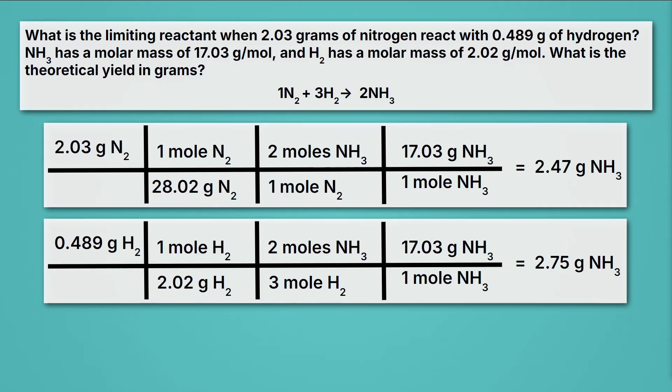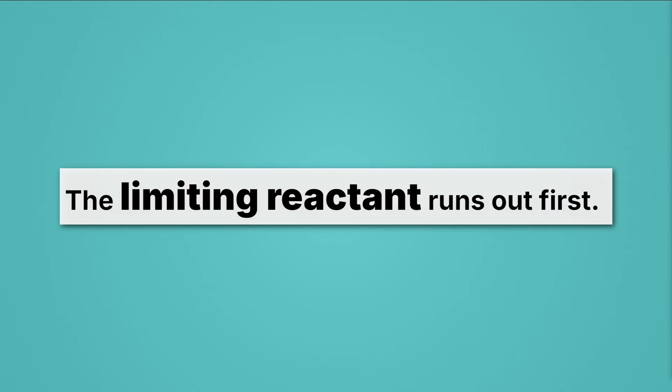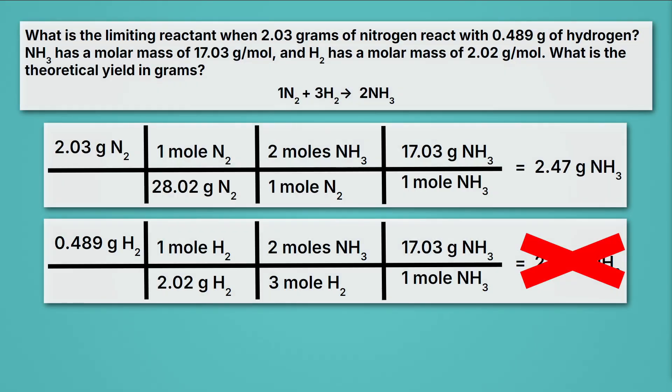So here, nitrogen gives us 2.47 grams eventually, and hydrogen eventually gives us 2.75 grams. This 2.75 grams doesn't ever happen, and that's because our limiting reactant, the nitrogen, runs out. And when I have no more nitrogen, I can't make any more ammonia. So remember, the limiting reactant runs out first. And that's what allows us to say that this second step of conversion doesn't actually tell us how much product we can make. The smaller number is always going to be the one that's most important.